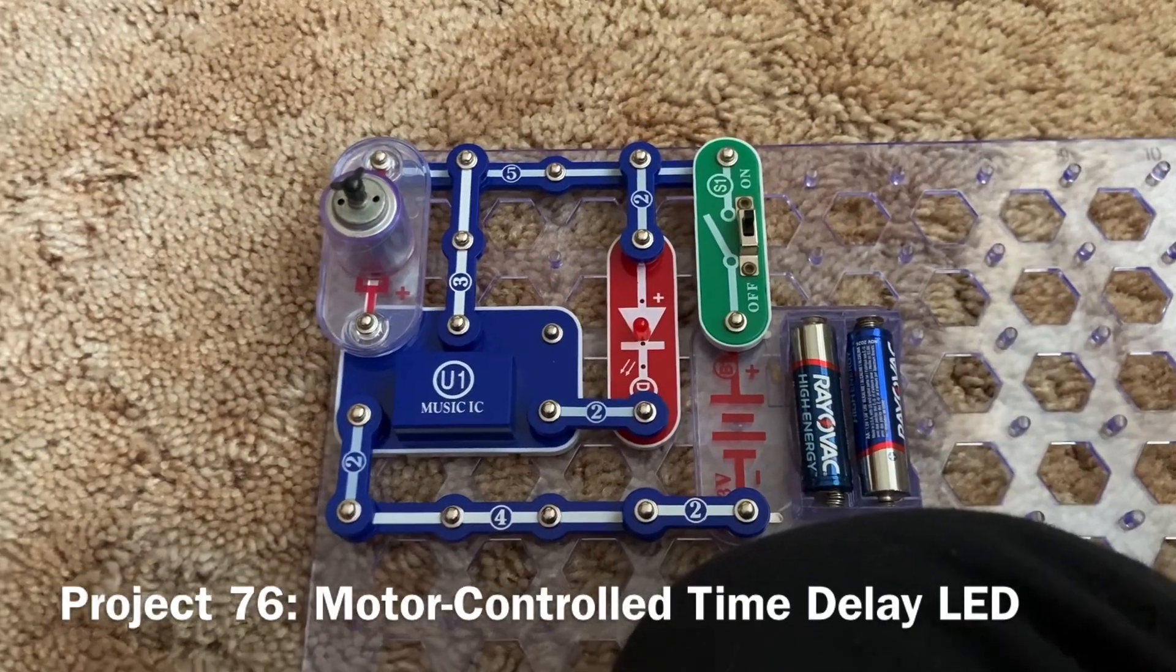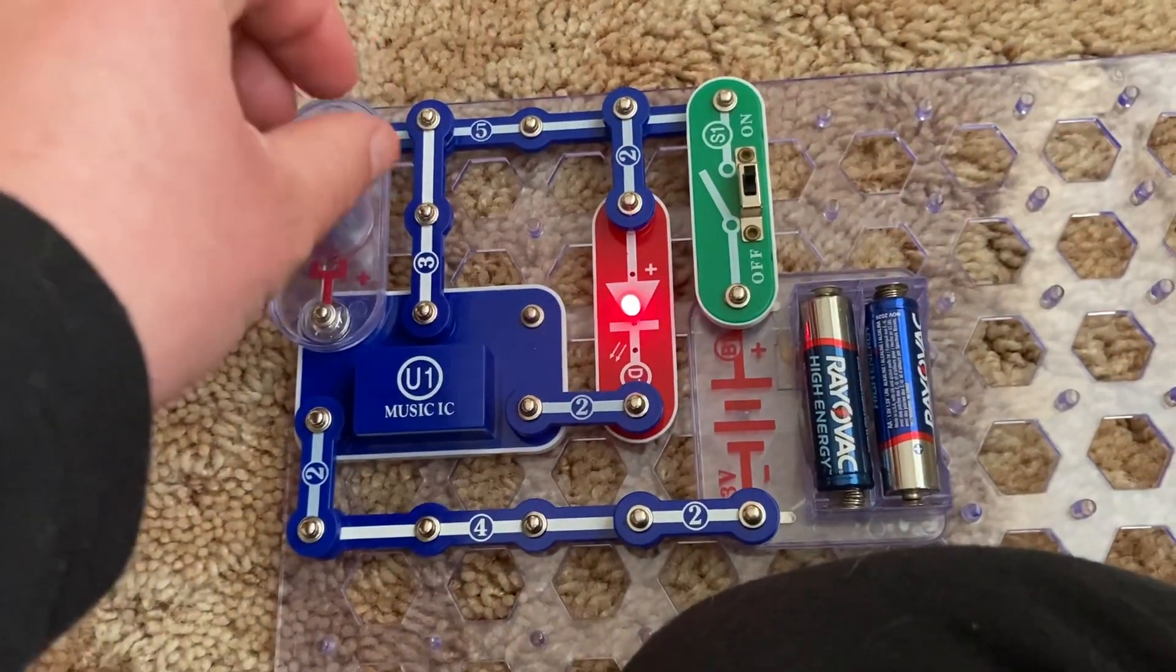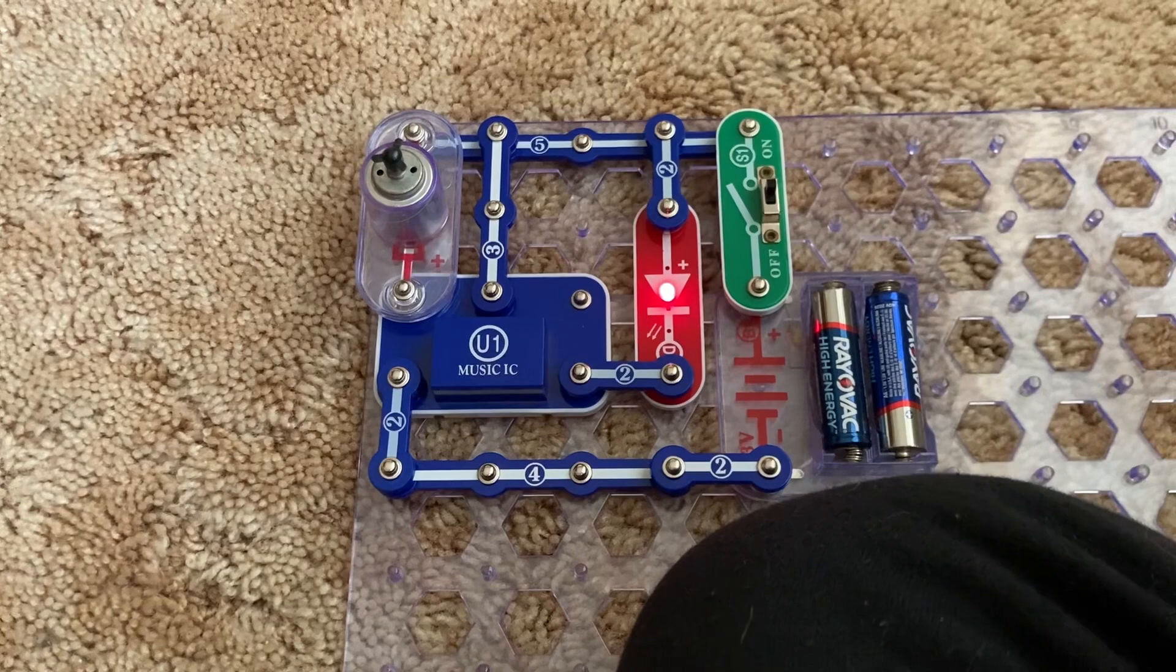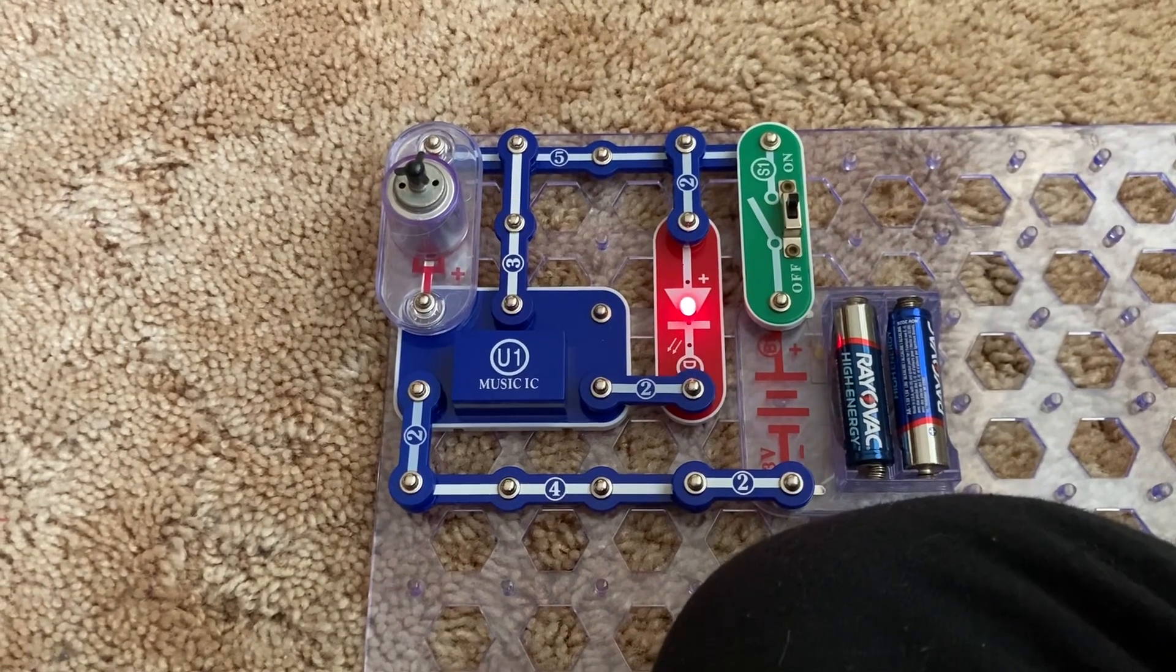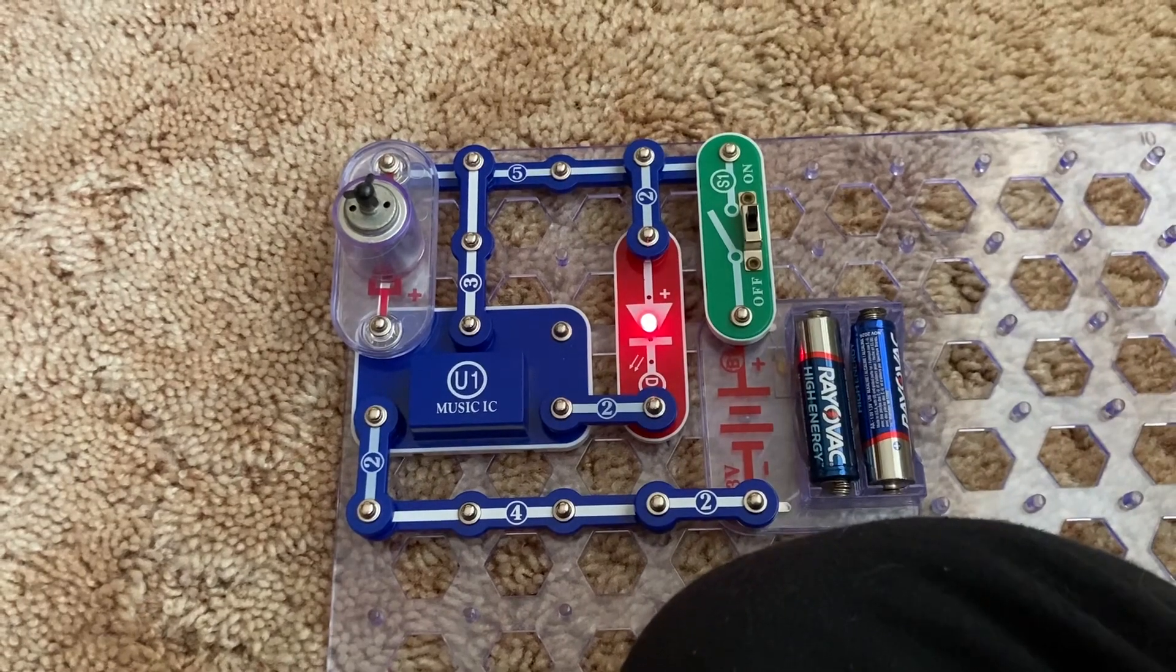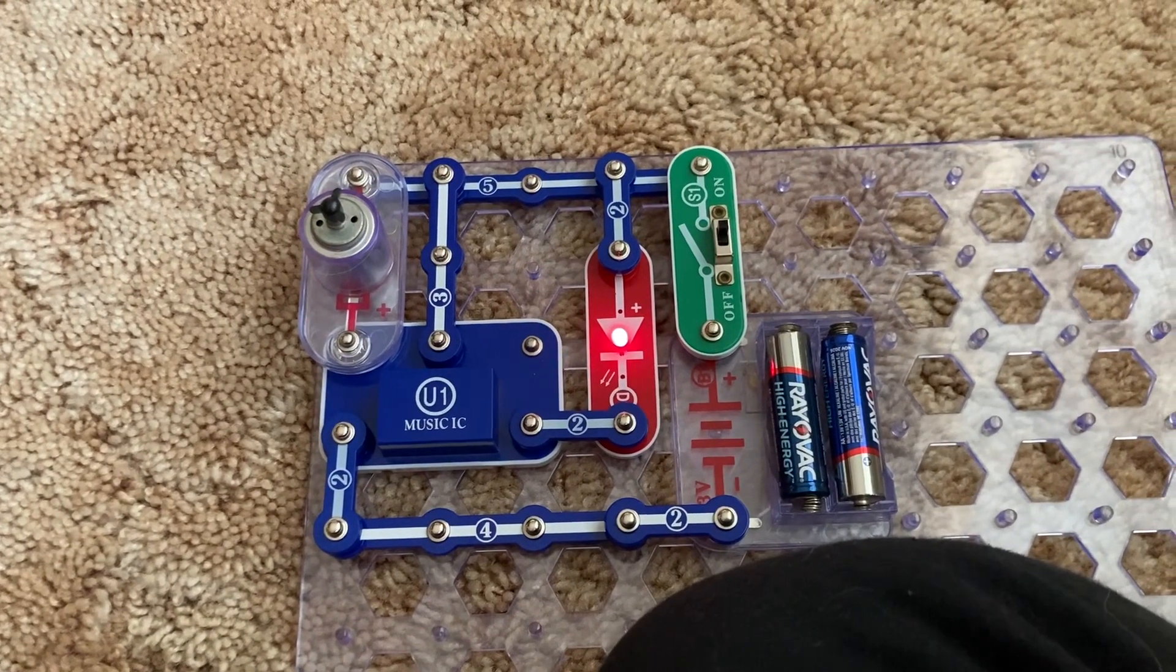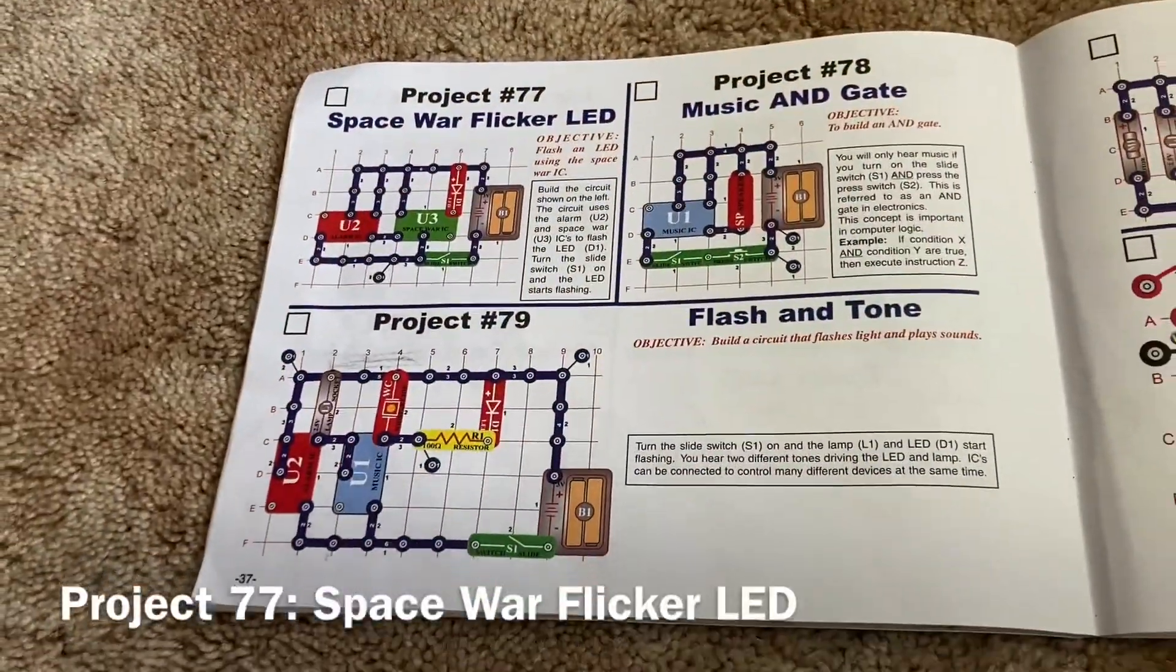Lastly, for Project 76, motor control time delay LED. When I turn the motor, the LED comes on. Same principle as in Project 73, but with the LED instead of the lamp. Same principle as in Project 75.